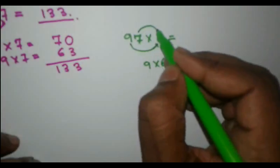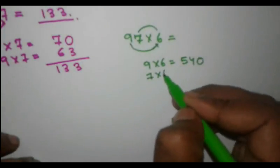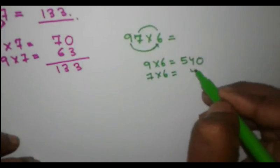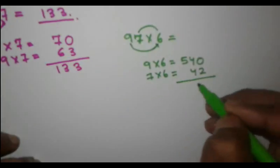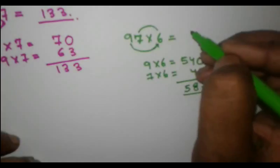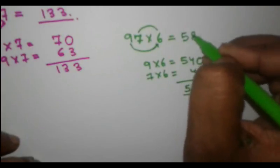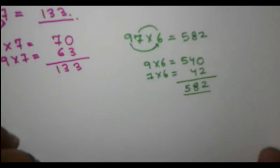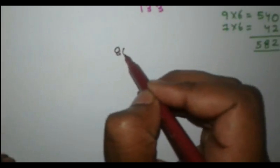We will multiply 7 into 6, which is equal to 42. We will add it and we will get 582. So 582 is the answer. Now let's take one last example, that is 86 into 5.